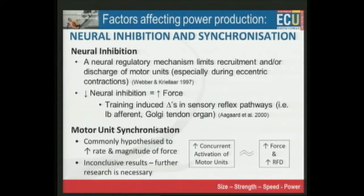Even during that movement, the body doesn't switch everything on at once — it cycles. Because as the motor units contract, they fatigue, and we have to cycle through, resting some while others are firing. Through training, there is evidence that the athlete can learn to override that fail-safe — a bit like turning the ABS off — so that all motor units in a given muscle can be switched on almost simultaneously. That produces much higher force and much faster rate of force development.